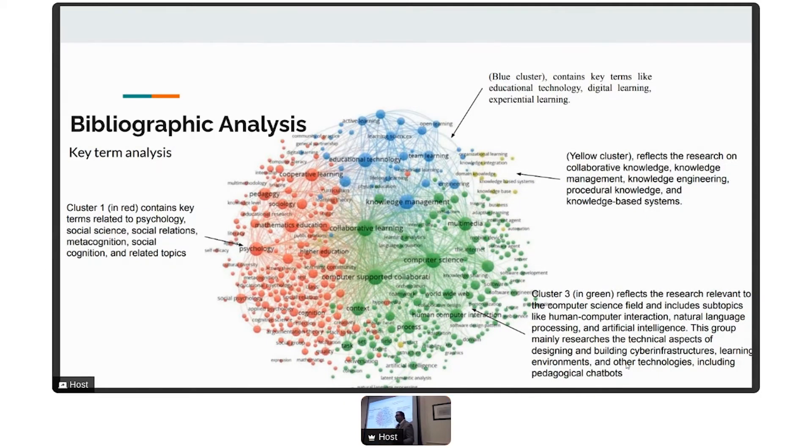After we constructed the network, we did something called clustering, so we extracted the groups where the density within this group is higher than the density outside groups, where these key terms tend to show up more often, usually together than showing up with other keywords. There are around four main clusters that show up if you look in a high-level way. These clusters reflect different themes or directions or patterns related to this area. The first theme was related to psychology, social science, social relations, metacognition. This means there are some work relevant to cyber infrastructures, online environments, teaching environments, and learning environments that somehow is touching these topics.